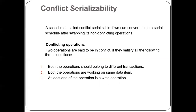What is the meaning of a conflict operation? Two operations are said to be in conflict if they satisfy all of the following three conditions: both operations belong to different transactions; both operations are working on the same data item; and at least one of the operations is a write operation.